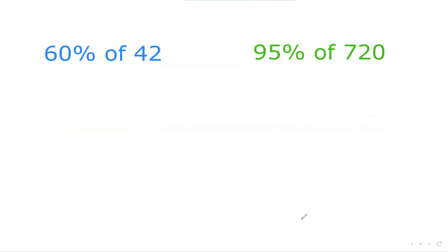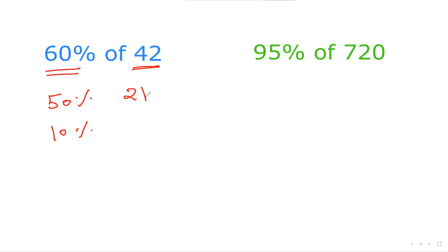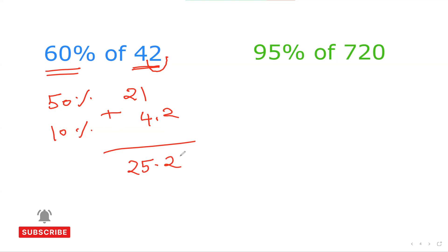Based on those basics, we'll do some real questions. Let's say I want 60 percent of 42. I can think of 60 percent as 50 percent plus 10 percent. The 50 percent of 42 is half, which is 21. The 10 percent of 42 is 4.2. Adding them: 21 plus 4.2 equals 25.2. After practicing, you'll realize you can do this very quickly — in two or three seconds.